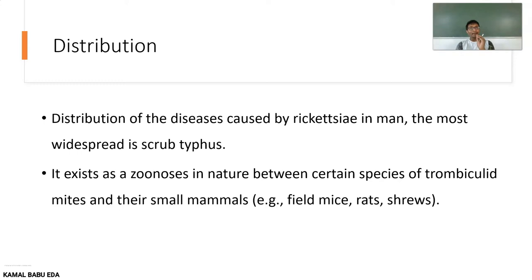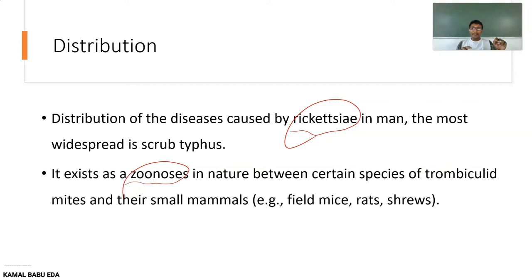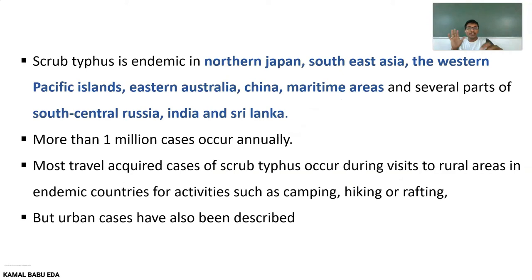Scrub Typhus is mainly caused by rickettsia in men and is the most widespread disease among rickettsial diseases. It mainly exists in the form of zoonosis between certain species of trombiculid mites and their small mammals — for example, field mice, rats, and shrews — which are the major reservoirs.